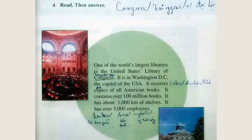One of the world's largest libraries is the United States Library of Congress. It is in Washington, D.C., the capital of the USA. It receives copies of all American books. It contains over 100 million books and has about 1,000 kilometers of shelves. It has over 5,000 employees. Questions: A) Where is the Library of Congress? B) Why is it so large? C) How many books does it have? D) How long are its shelves? E) How many people work there?